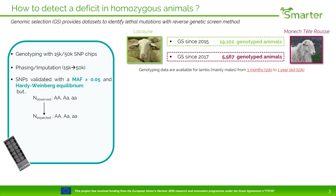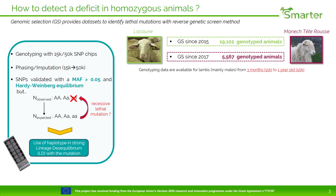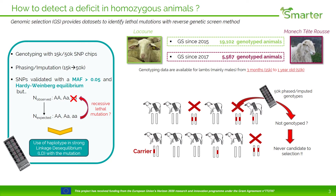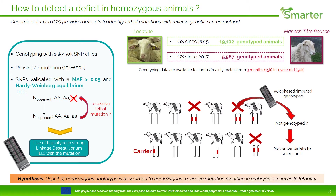Almost all SNPs present on the chip have a minor allele frequency higher than 5% and respect Hardy-Weinberg equilibrium. However, for recessive lethal mutations, we never observe homozygous animals. As a result, to identify such mutations, we use haplotypes in strong linkage disequilibrium with the mutation. So, the strategy is that we assume a haplotype is segregating in the population but is never observed in the homozygous state — that is to say, homozygous animals are not genotyped because they were not born or they were counter-selected in the selection scheme. The hypothesis is that a deficit of homozygous haplotypes is associated with homozygous recessive mutations resulting in embryonic to juvenile lethality.